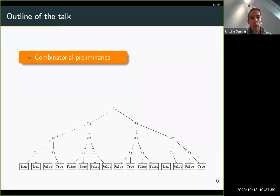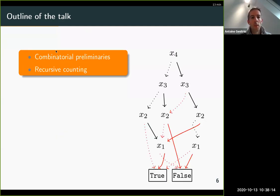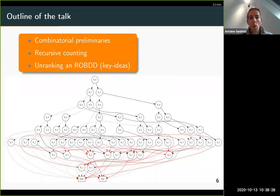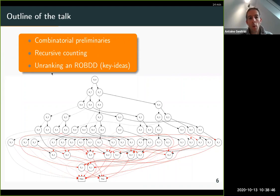This is the outline of my talk. First, I will give some combinatorial preliminaries to understand how I enumerate the structure. Once we have the combinatorial point of view, I will give the recursive counting for ROBDDs. Once we have the recursive counting, I will give an unranking algorithm to either exhaustively sample ROBDDs or, since the number grows so fast, use it as a uniform sampler, taking two parameters: the number of variables and the desired size of the ROBDD.